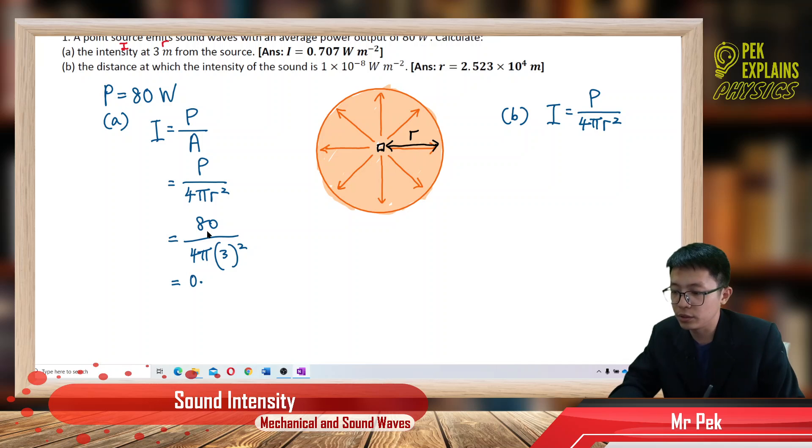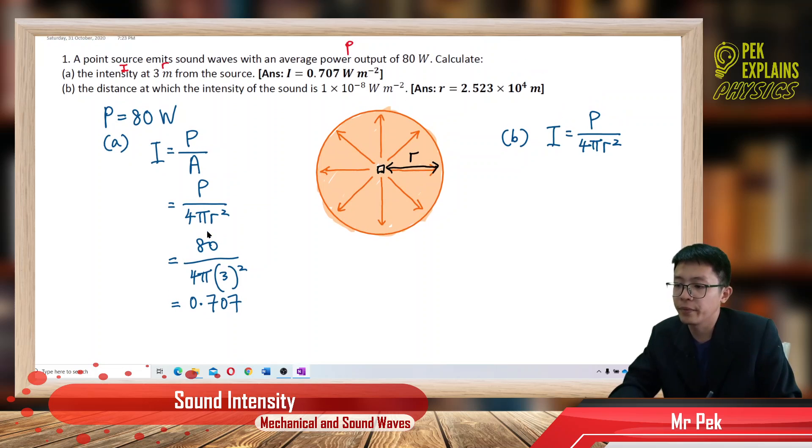So I get my answer 0.707. What's the unit? If I forget the unit, just check the formula. My power is in watts, my area is meter square. Is it meter? Yeah, it is meter.